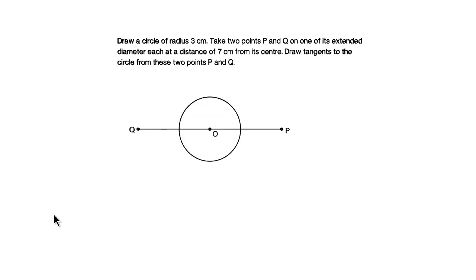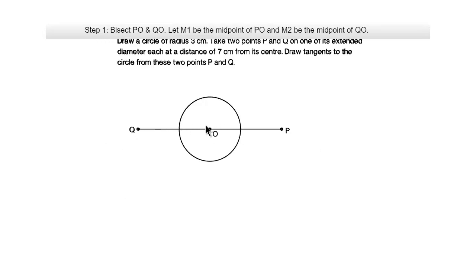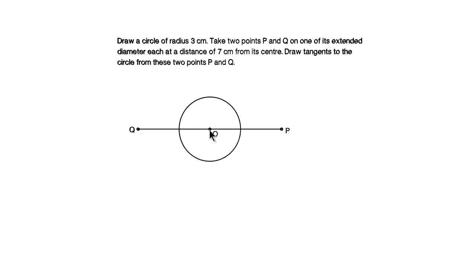Now let us follow the steps to draw the tangent to the circle. Bisect lines PO and QO and find the midpoints. Let us draw the perpendicular bisector for line OP, as we need to draw four tangents using two lines OP and OQ. Measure more than half of OP, keep your compass at point P, and draw an arc above and below the line OP.